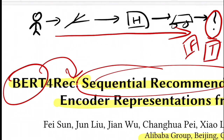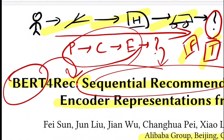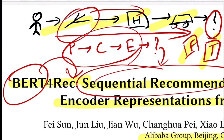Since you've made certain decisions in the past, future recommendations are dependent on those — that's the temporal nature. Similarly, in e-commerce, if you purchased a phone, then a charger, then earphones, the next likely purchase is a phone cover. Traditional systems would fail here by still recommending flight tickets even after you've already booked them, so we need to model everything in sequence.